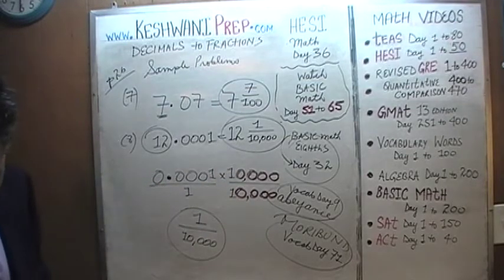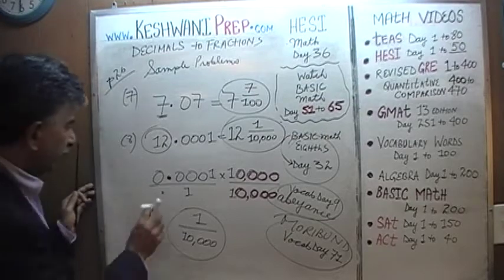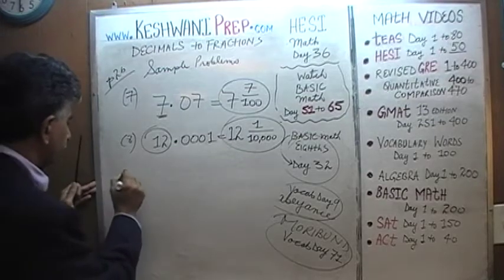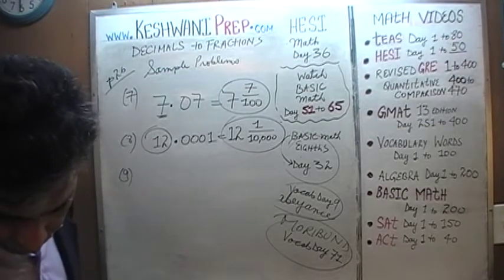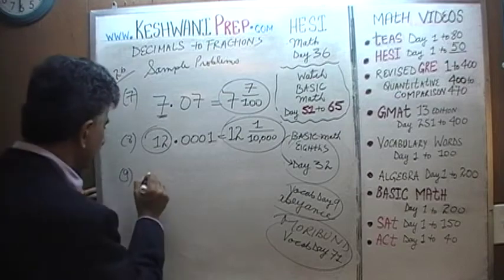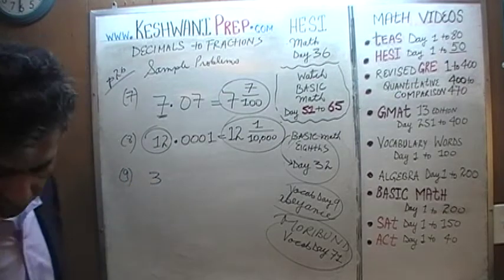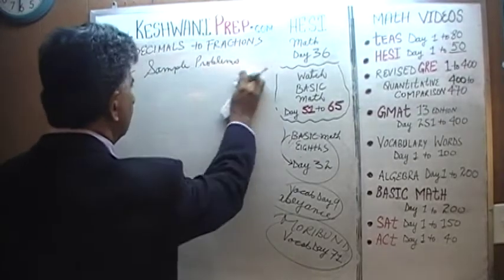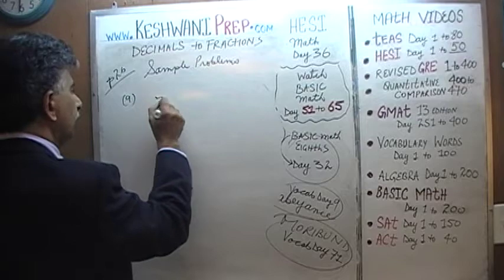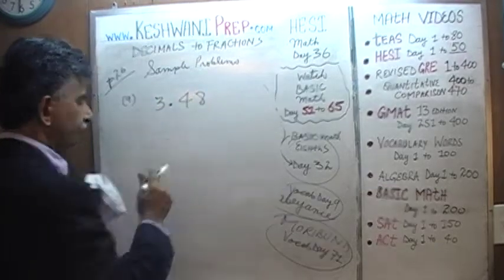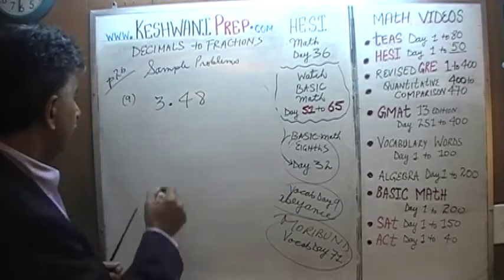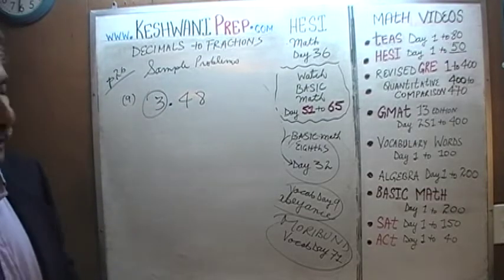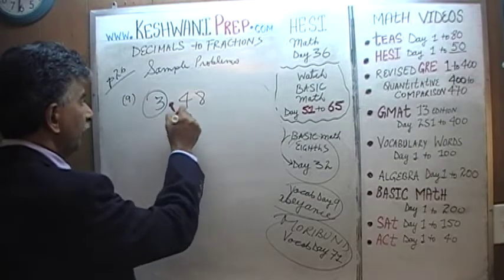Let's do number 9, the penultimate one. Number 9 is asking us to convert 3.48. Again, we're going to leave the 3 in abeyance — keep it aside, we'll deal with it later. Right now we're going to concentrate on 0.48.